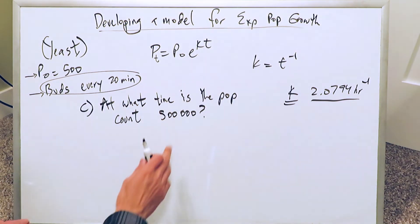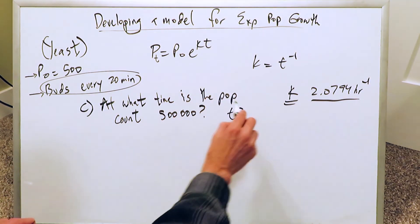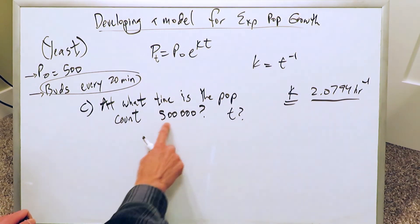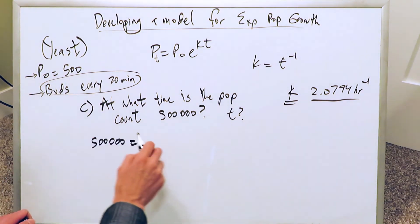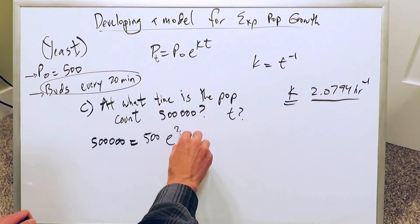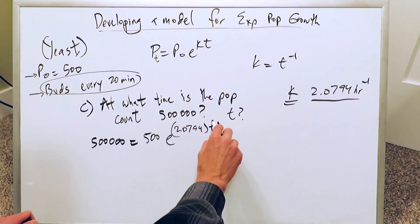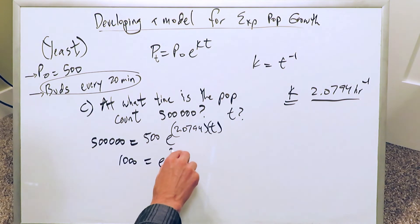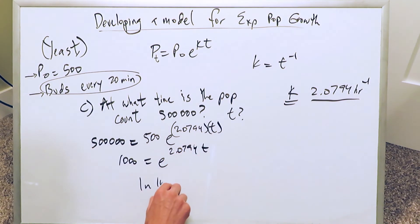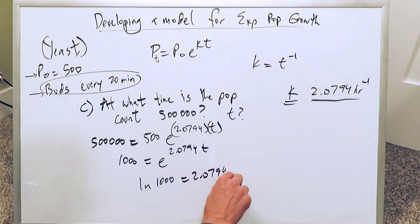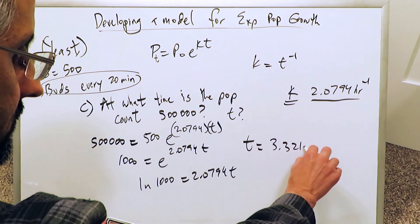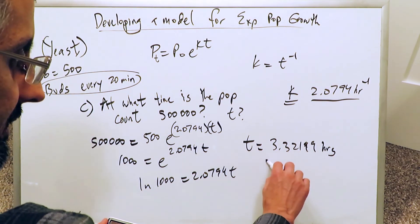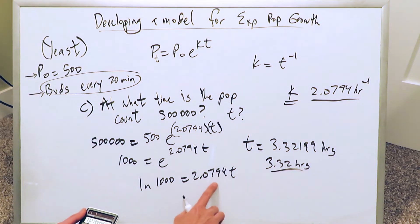At what time does the population reach 500,000 cells? We're solving for t. We have Pt = 500,000, P₀ = 500, and k = 2.0794. Dividing: 1000 = e^(2.0794·t). Taking the natural log: ln(1000) = 2.0794·t. Solving for t gives approximately 3.32 hours. In 3.32 hours, the population will hit 500,000.